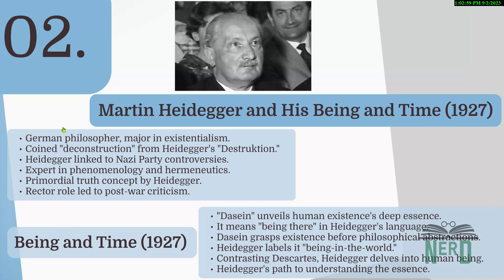If you ask why Heidegger is important in deconstruction — well, his work gave birth to that word exactly, thanks to his concept called 'destruction' (not deconstruction), which is all about taking apart and examining things closely. Heidegger had a lot to say about truth — he believed that there's something deep down like a primal truth underlying things. Now, in his major work Being and Time, published in 1927, he came up with the cool term 'Dasein,' which basically means 'being there.' He thought humans have this deep, non-abstract understanding that shapes how we live — he called it 'being in the world.'